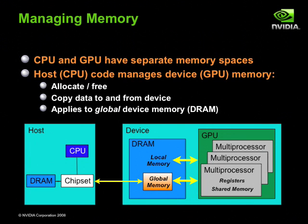Having briefly discussed the CUDA compilation process, we now turn our attention to writing CUDA code. The first topic we discuss is managing device memory. The CPU and GPU have separate memory spaces, and both these memory spaces are managed from the host or CPU. Device memory management from host code includes the allocation and deallocation of memory, as well as data copying between host and device. The device memory we discuss here is the global memory discussed in the programming model overview.